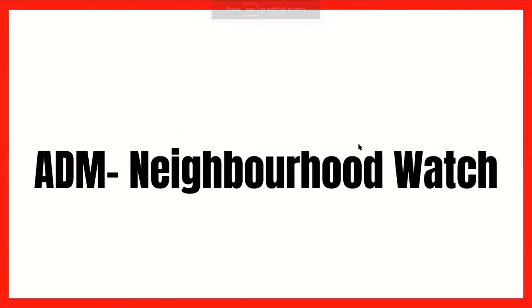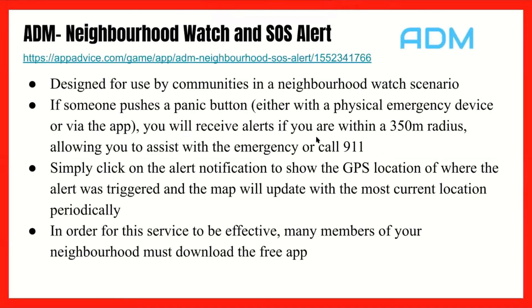Moving on to our last section: ADM Neighborhood Watch. ADM is designed for use by communities in a neighborhood watch scenario. It's an app. If someone pushes a panic button — either with a physical emergency device or via the app — you'll receive alerts if you're within a 350-meter radius, allowing you to assist with the emergency or call 911. You just click on the alert notification to show the GPS location of where the alert was triggered, and the map will update with the most current location periodically. For this service to be effective, the people around you have to have the app too — it's something for communities to organize together.